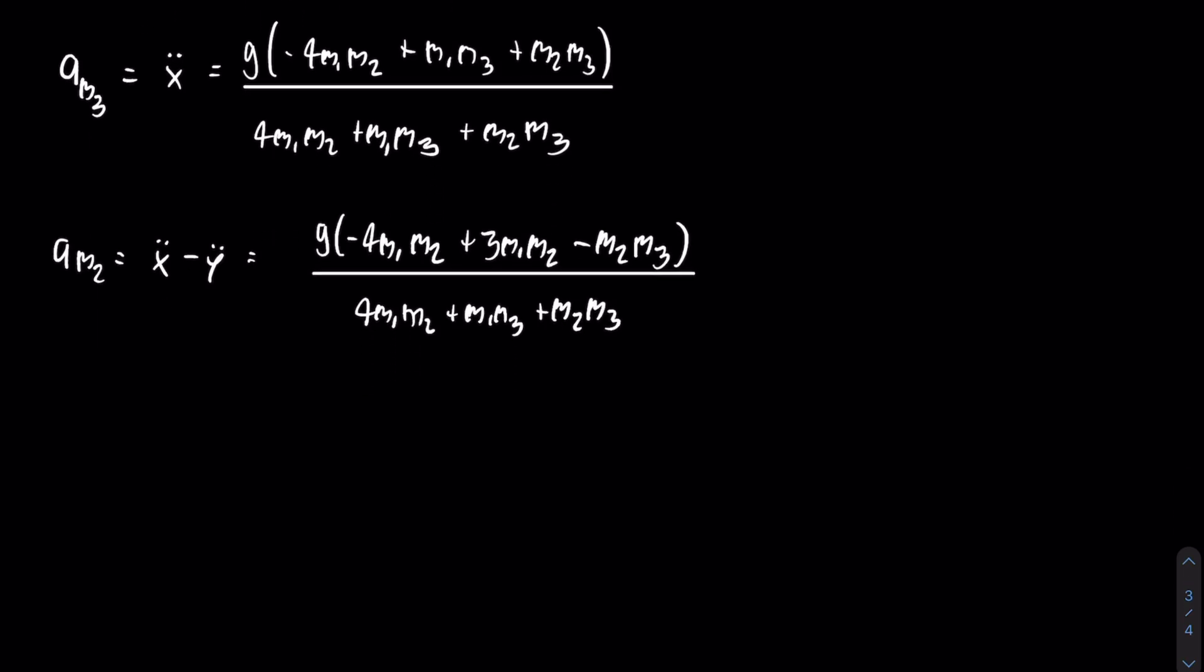Lastly, we just need to find the acceleration of mass one, which is going to be equal to x double dot plus y double dot. And again, like before, I just added them together and then simplified it. And here is the final result of that.